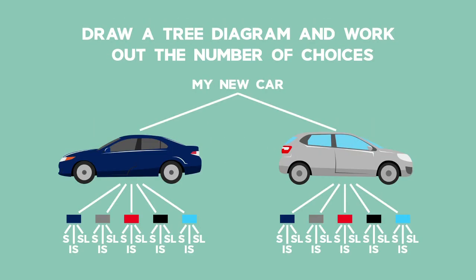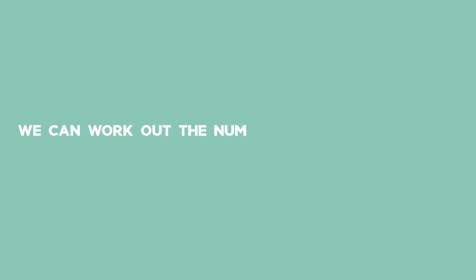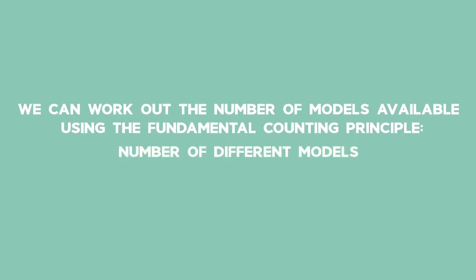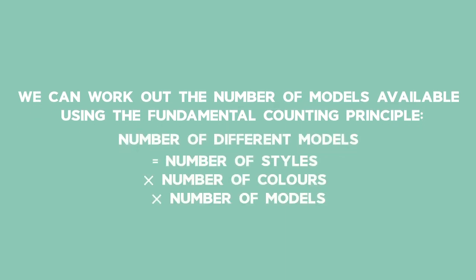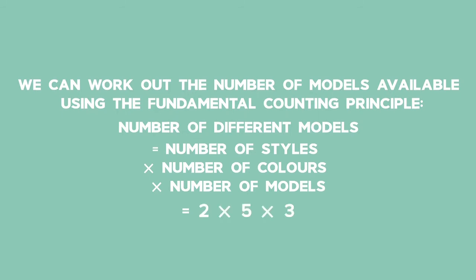How many different models are there? You can draw a tree diagram and work out the number of choices. From the tree diagram, we can see that there are 30 different models of the car available. We could also work out the number of models using the Fundamental Counting Principle: the number of different models is equal to the number of styles times the number of colours times the number of models, which is equal to 2 times 5 times 3, which equals 30.